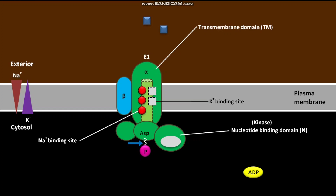The Na+/K+ ATPase then changes its conformation from E1 to E2 with three bound Na+ ions. In this E2 conformation, a low-energy phosphorylation bond is found between the transferred phosphate group and the aspartate amino acid. The transition from E1 to E2 forms two high-affinity K+ binding sites, which are accessible to the exoplasmic face of the Na+/K+ ATPase.